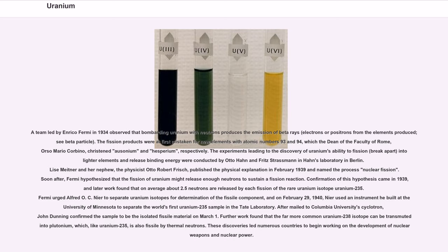Soon after, Fermi hypothesized that the fission of uranium might release enough neutrons to sustain a fission reaction. Confirmation of this hypothesis came in 1939, and later work found that on average about 2.5 neutrons are released by each fission of the rare uranium isotope uranium-235. Fermi urged Alfred O.C. Nier to separate uranium isotopes for determination of the fissile component, and on February 29, 1940, Nier used an instrument he built at the University of Minnesota to separate the world's first uranium-235 sample in the Tate Laboratory. After being mailed to Columbia University's cyclotron, John Dunning confirmed the sample to be the isolated fissile material on March 1. Further work found that the far more common uranium-238 isotope can be transmuted into plutonium, which, like uranium-235, is also fissile by thermal neutrons. These discoveries led numerous countries to begin working on the development of nuclear weapons and nuclear power.